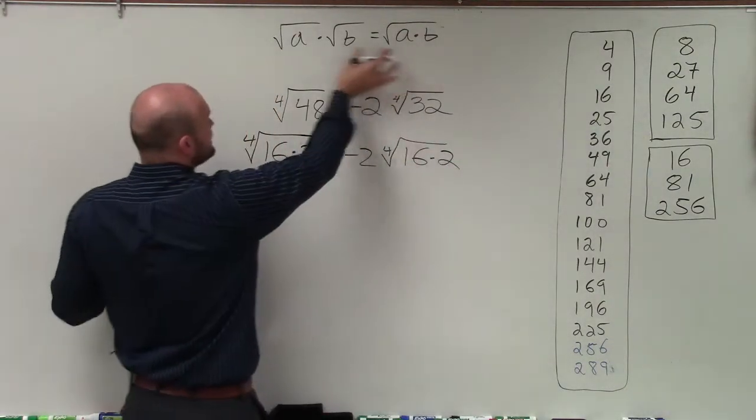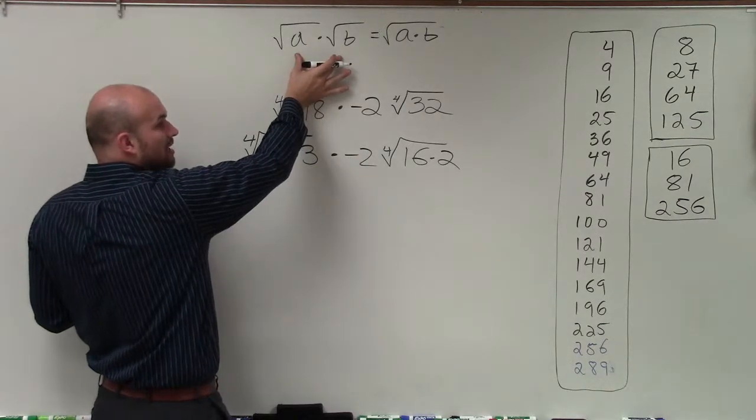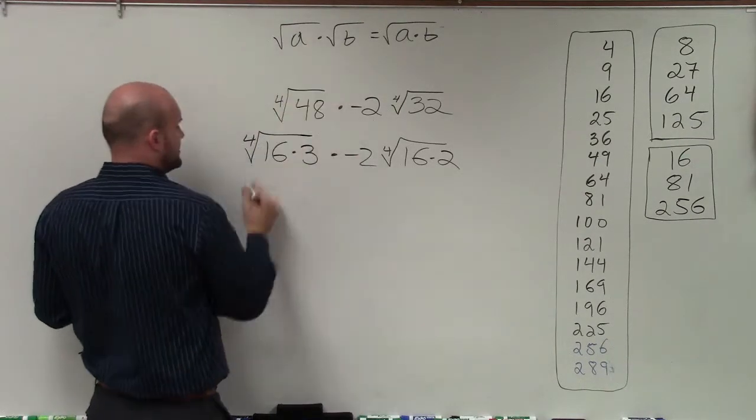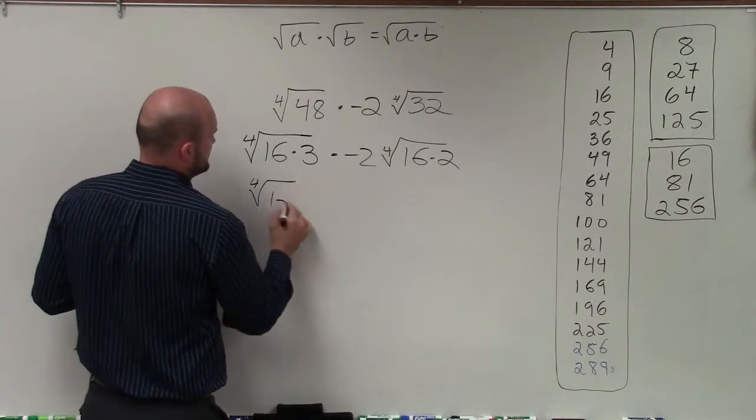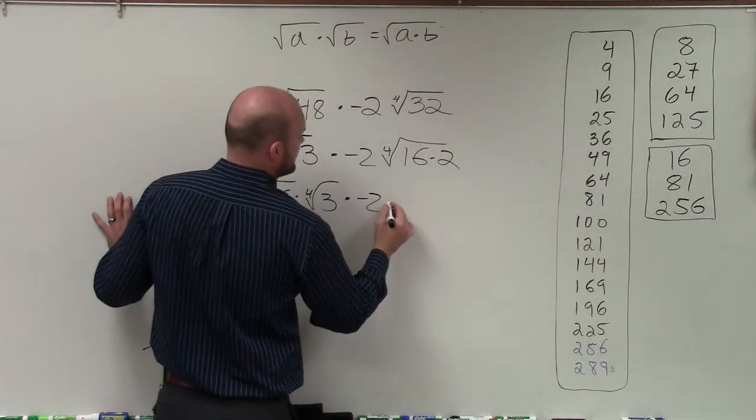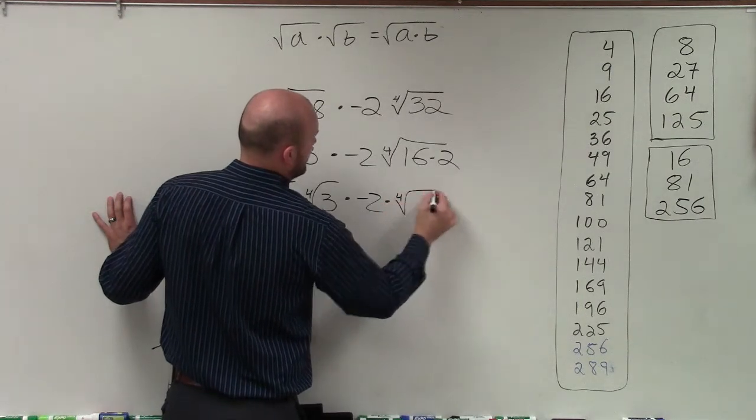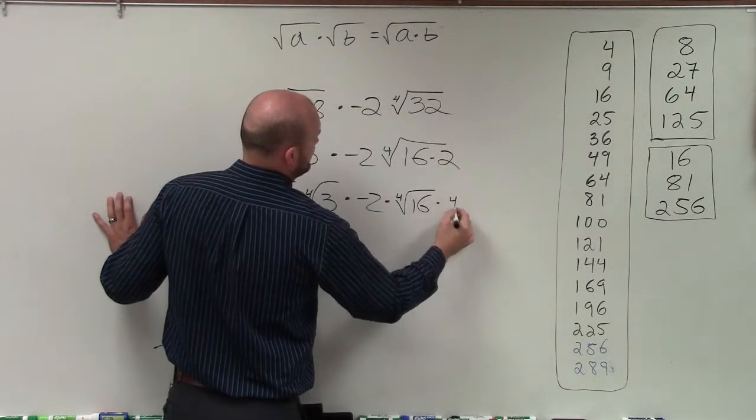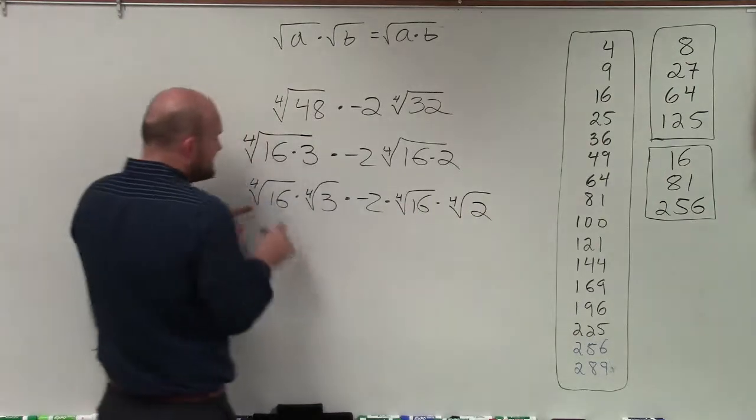And what's important about that is once I can write it as the product, I can take the fourth root of those two numbers separately. So really, this is the fourth root of 16 times the fourth root of 3 times negative 2 times the fourth root of 16 times the fourth root of 2.